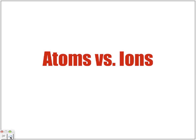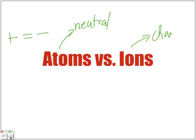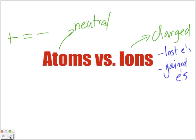Let's look at the comparisons between an atom and an ion. Atoms refer to things that are neutral — the positives, the protons, equal the electrons. Ions refer to charged atoms, atoms that carry a charge. If we have an ion, it means they have either lost electrons or they have gained electrons. We will not lose or gain protons. We lose or we gain electrons only.